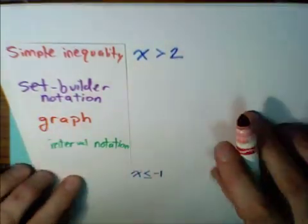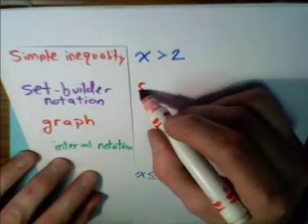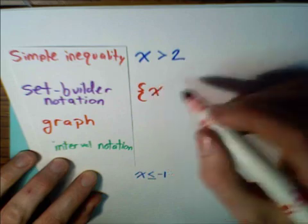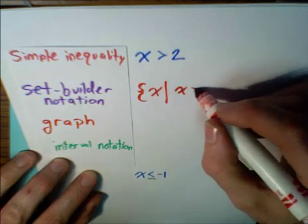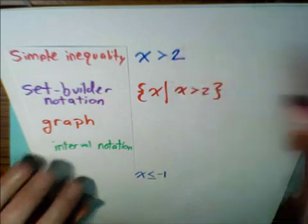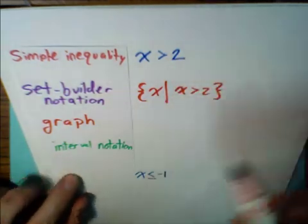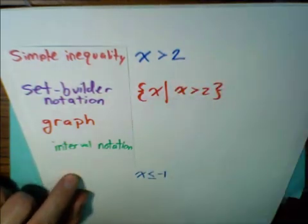So let's take a look. Simple inequality, x is greater than 2. In set builder notation, we'd say the set of all values x such that x is greater than 2. Really, we haven't changed anything. We're just using a set notation. And now we're going to graph it.